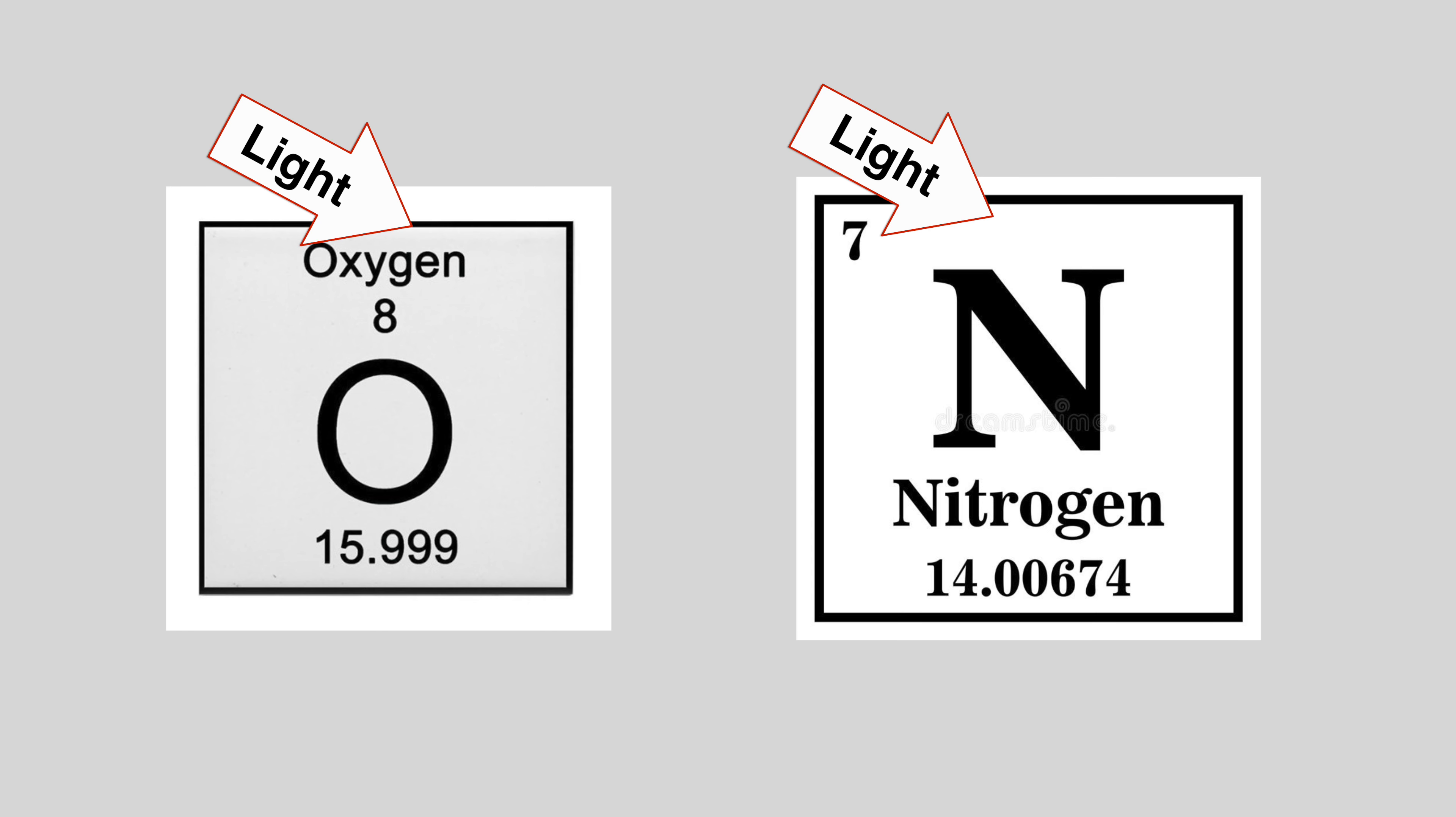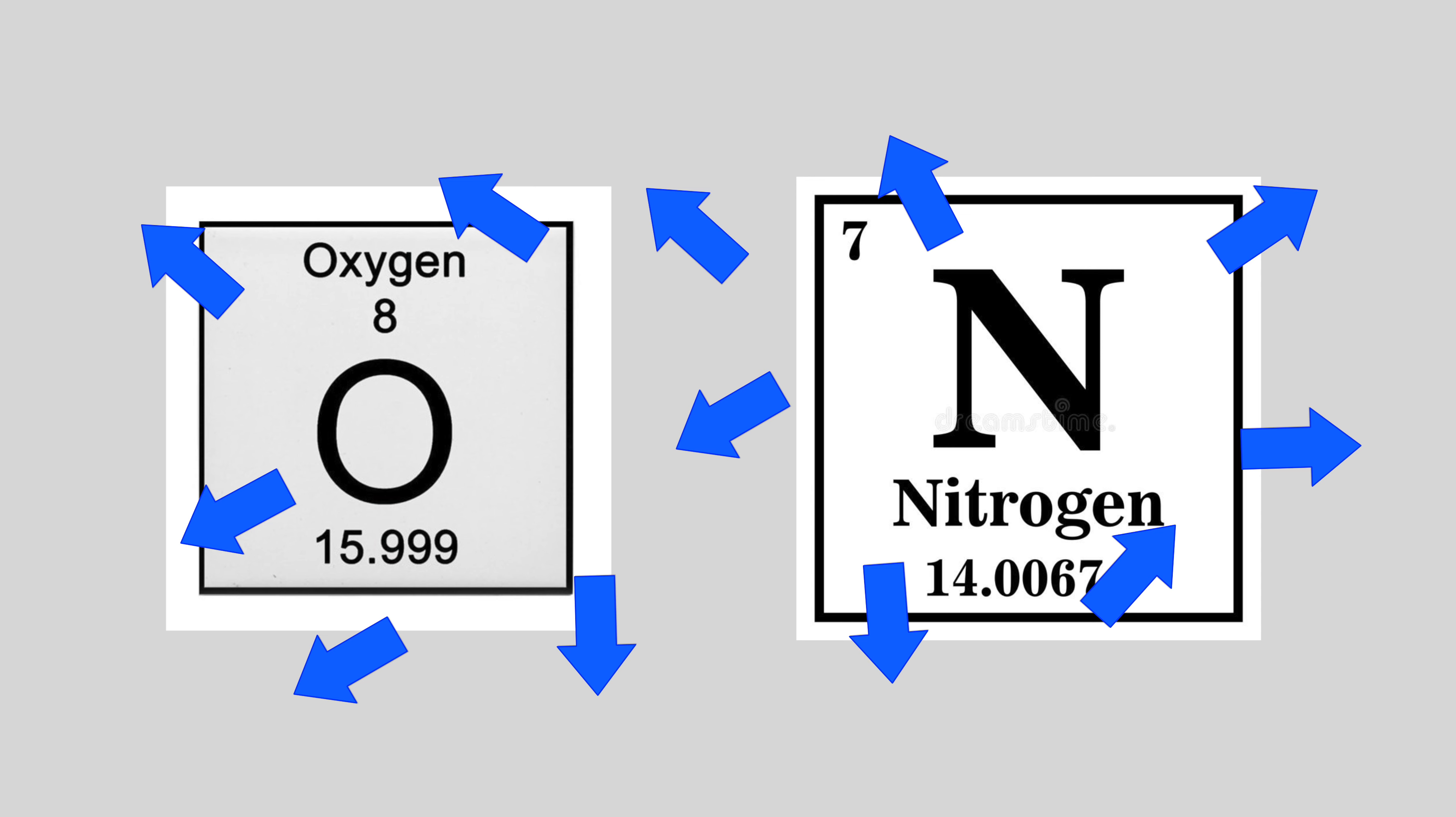Lighter colors such as red and orange have longer wavelengths and darker colors like blue and violet have shorter wavelengths.